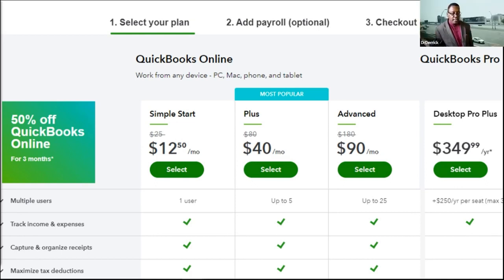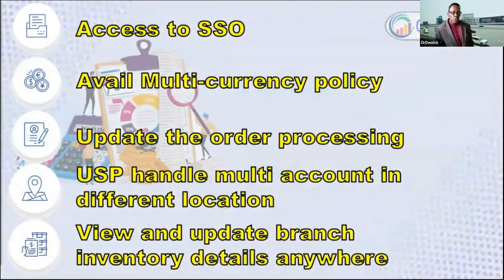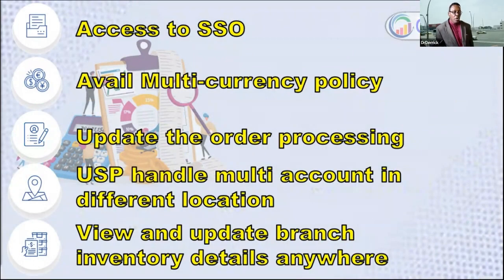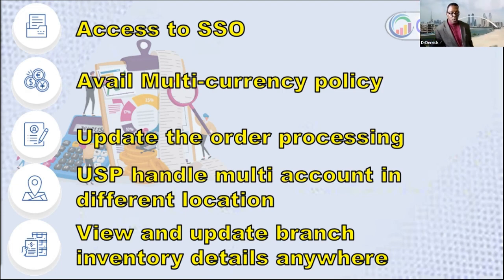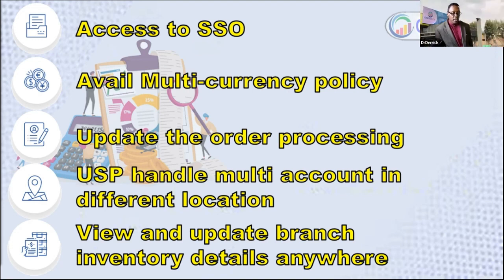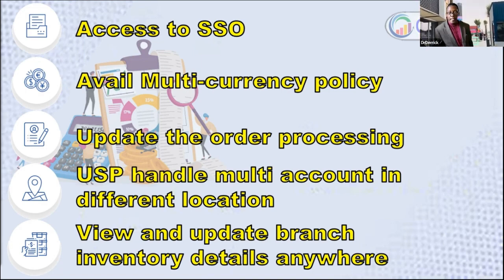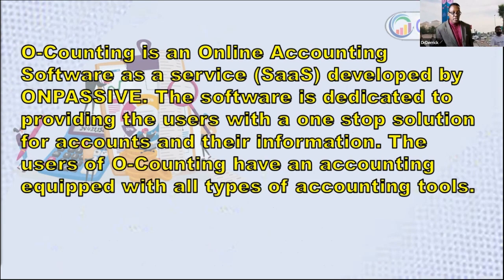OAccounting offers access to SSO, multiple currency support — which a lot of accounting software don't have — updated order processing, the ability to handle monthly accounting in different locations. That is very important because we have over 200 countries in the world, so we need multiple locations. You can view and update branch inventory details from anywhere.